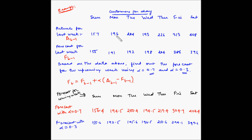Let us look at Monday. The actual is 196 and the forecast for last week is 191. With alpha equals 0.3, the forecast for Monday is 192.5, which is closer to 191. With alpha equals 0.7, the forecast is 194.5, which is further away from 191. Similarly, if you note the other data values, you will find the same kind of trend. So the value of alpha is key to determining the accurate forecast.